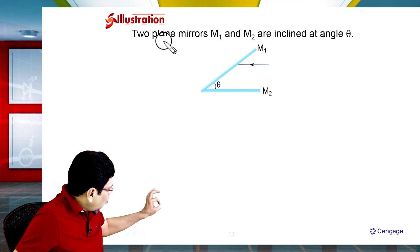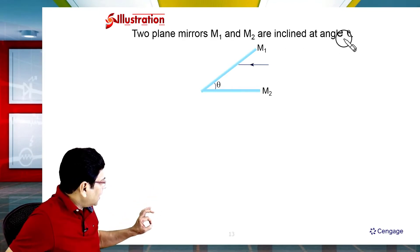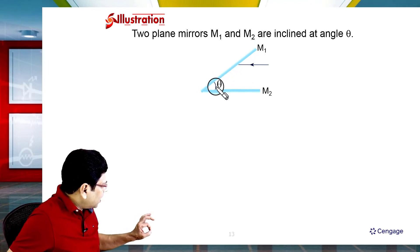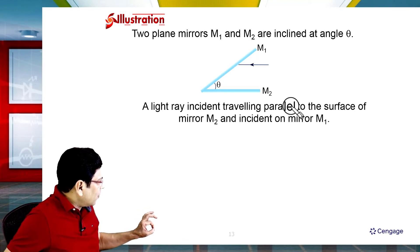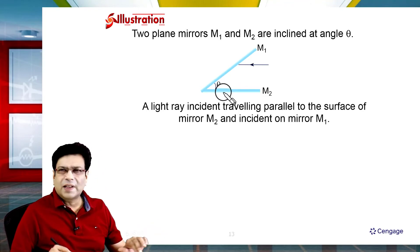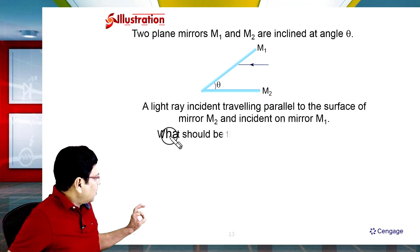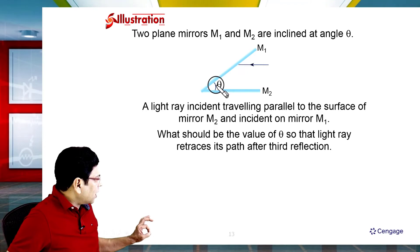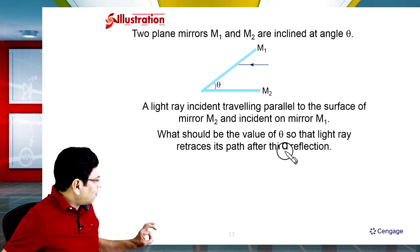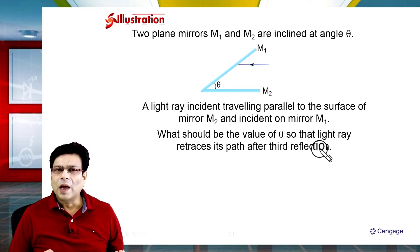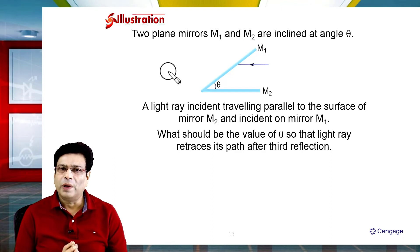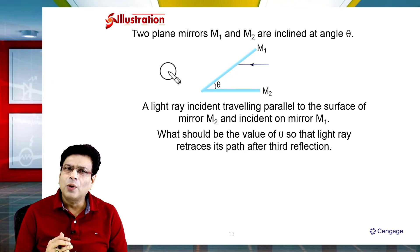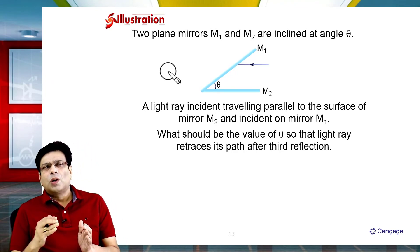Now let us take one more illustration. In this illustration, we are given two plane mirrors M1 and M2 inclined at angle theta. What should be the value of theta so that the light ray retraces its path after the third reflection? If light ray is normally incident, it will retrace its path.